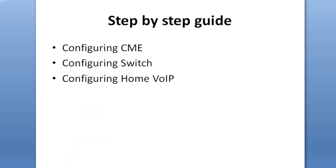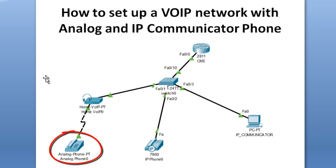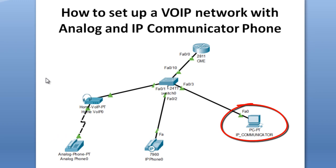I will show you a step-by-step guide to set up the Voice over IP network using those three devices. We're going to use this diagram here — this router is going to be the CME, and we have a switch connecting the phones. The analog phone is on the left side, the IP phone is in the middle, and the IP Communicator is on the right side.